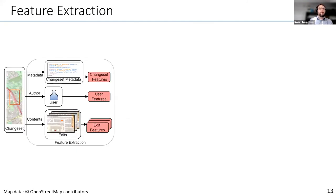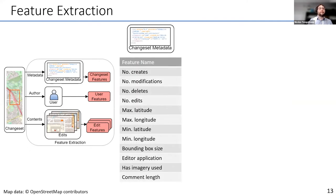For feature extraction, we have three kinds of feature categories. The first is changeset features, which aim to capture changeset metadata: how many objects are created or deleted, what is the bounding box, what is the location on earth, and whether there was a comment.